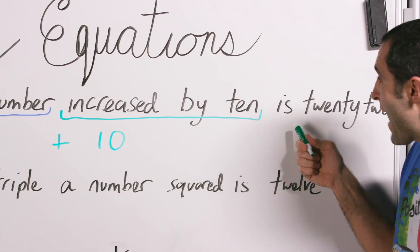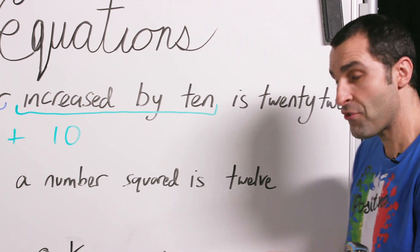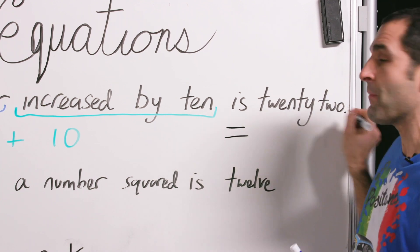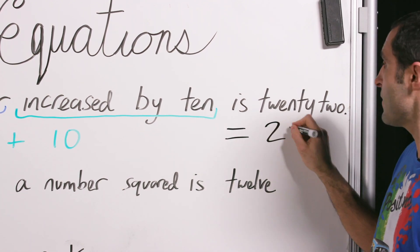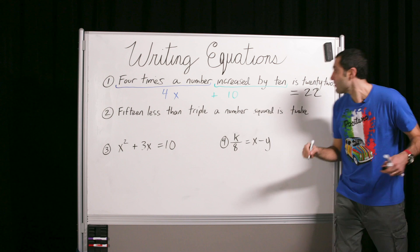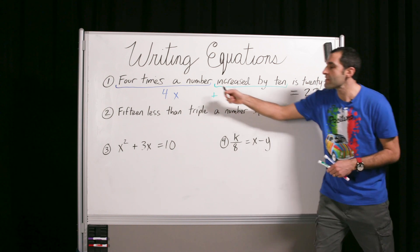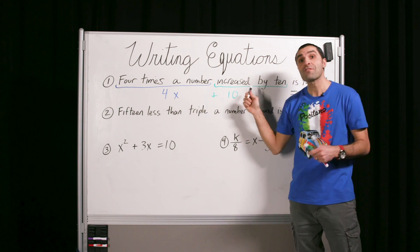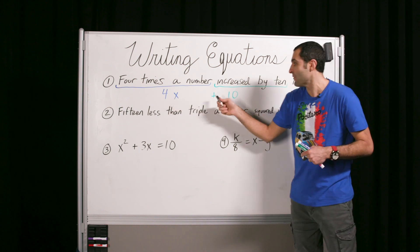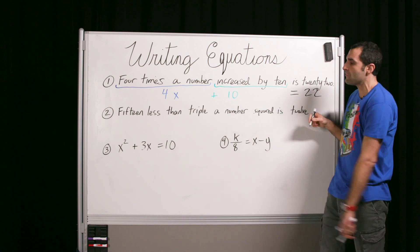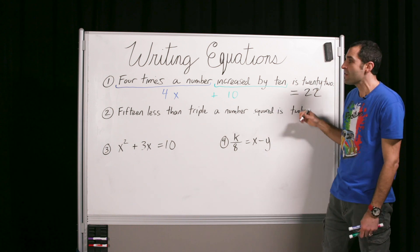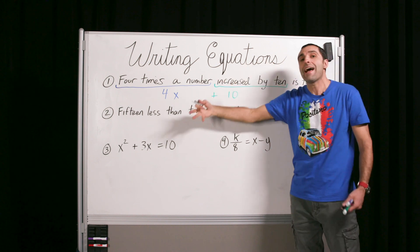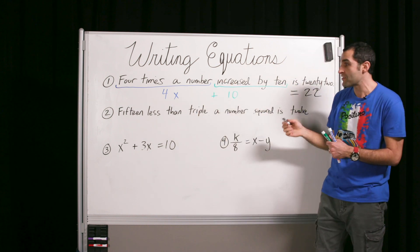Is in math land translates to equals because that means is the same as. Then we have the number 22. So there it is. We just translated this English equation into a math equation. This is the universal language of math. And this is something that anyone that knows math can solve. It doesn't matter what language they speak. So being able to toggle between a verbal equation and a math equation is the task of this particular video. Let's try it again.